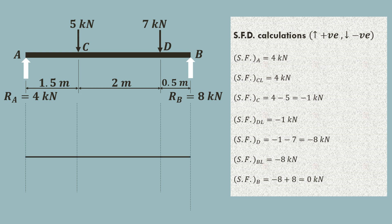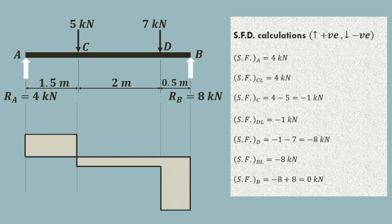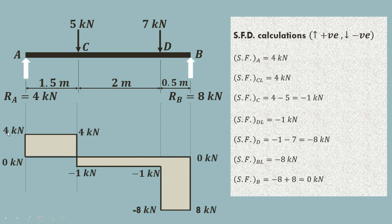Now we draw the shear force diagram. First draw the baseline. Shear force at A is 4 kN, remaining constant up to just left of C. Exactly at C it decreases to minus 1 kN, remaining constant up to just left of D. At D it drops to minus 8 kN, remaining the same up to left of B, then becoming 0 at B. The labeled values are: A = 4 kN, C-left = 4 kN, C = minus 1 kN, D-left = minus 1 kN, D = minus 8 kN, B-left = minus 8 kN, B = 0 kN.